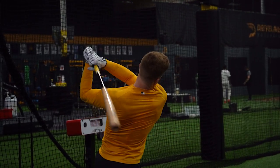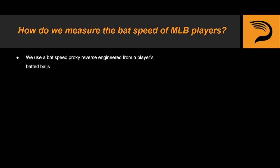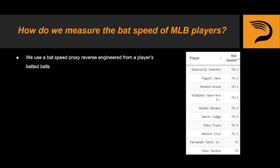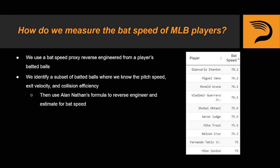Calculating the average bat speed of MLB players is a little bit more difficult. Since hitters aren't wearing Blast sensors during the game, we calculate MLB average bat speeds using a proxy that is able to reverse engineer a player's average bat speed from their batted ball data. The 2021 leaderboard is somewhat intuitive and definitely includes some familiar faces — a good rule of thumb is that the guys who are hitting the ball the hardest are swinging the bat the fastest. We identify a subset of batted balls where we know the pitch speed, exit velocity, and collision efficiency. This allows us to use Alan Nathan's formula to reverse engineer and estimate a player's average bat speed.